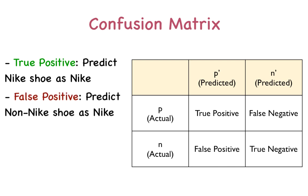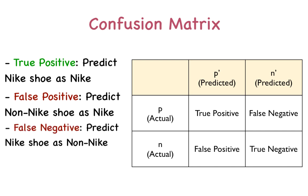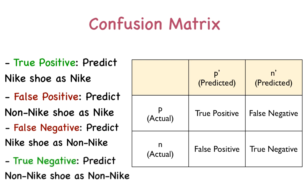A false positive occurs when the system takes a non-Nike shoe and says this is a Nike shoe — so the system is wrong. A false negative occurs when the system takes a Nike shoe but categorizes it as not Nike, so the system is incorrect. And the last state is a true negative, in which case the system takes a non-Nike shoe and designates it as not Nike — so the system is correct.